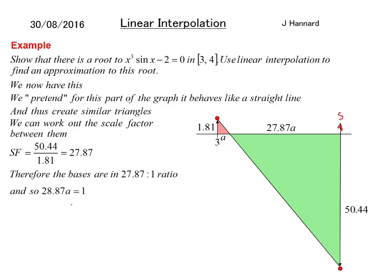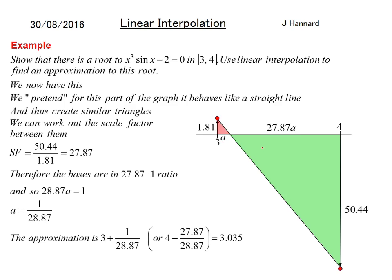Adding the bases together should give 1, since the distance between 3 and 4 is 1. So a = 1/28.87. You can either go that amount on from 3, or take off 27.87 lots of a from 4. Going with 3 + a, you get approximately 3.035, and that is the next approximate root.